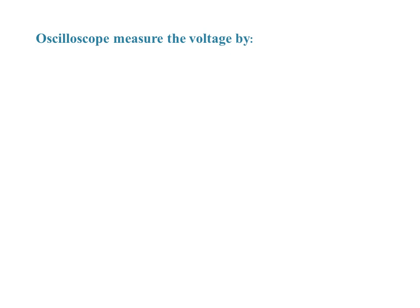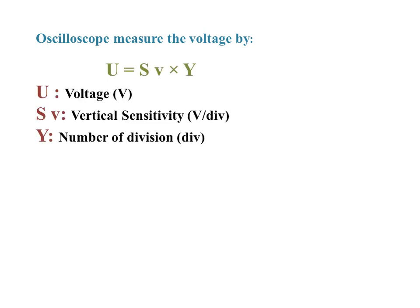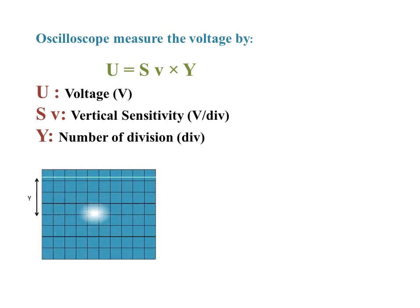How do we measure the voltage using an oscilloscope? The oscilloscope measures the voltage using this formula: U = Sv × Y, where U is the voltage in volts, Sv is the vertical sensitivity in volts per division, and Y is the number of divisions.